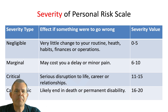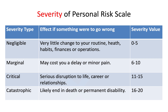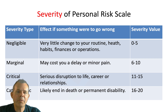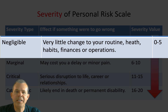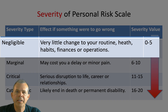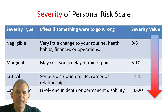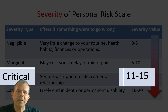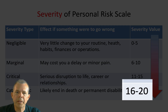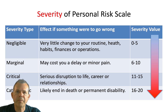For the severity dimension, we're going to have some very bad consequences and some negligible consequences. If there is very little change to your routine, health habits, finances, or operations, we call that negligible. Minor pain might rate at a 6 to 10 level. 'Critical' means things we have to pay attention to. 'Catastrophic' means this will end the business — or in the case of a personal problem, you might die. That's the severity scale.